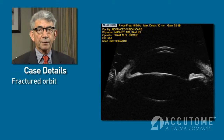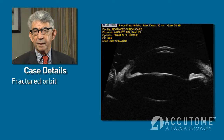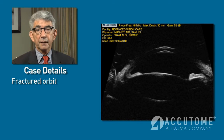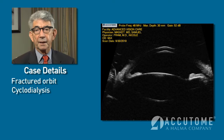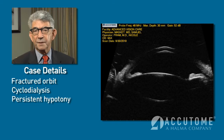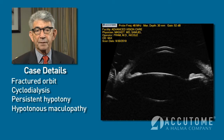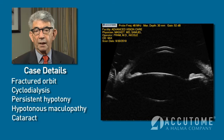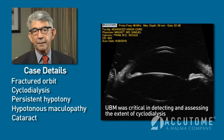Unfortunately, he struck the right orbit against the steering wheel, sustained a fractured orbit, and in addition, significant damage to the eye — including a cyclo-dialysis. He had hypotony lasting over a few months with subsequent swelling in the macula, what we call hypotony maculopathy, and very poor central vision. A cataract also ensued.